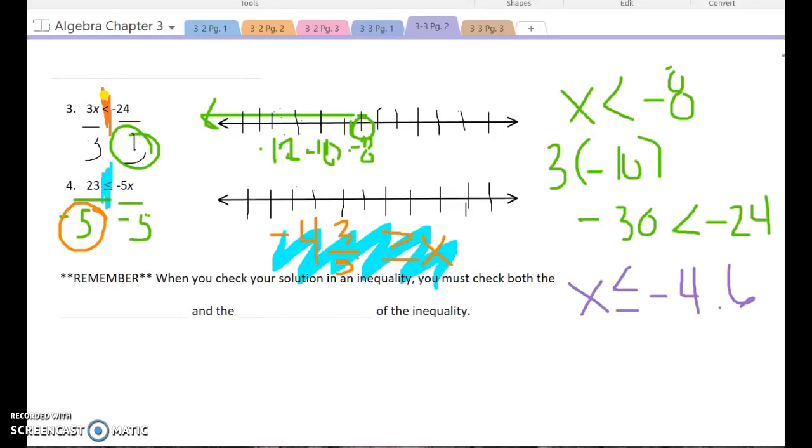So now my negative four and six tenths, when I go to graph it, if I decide that this is negative four and this right here is negative five, then this is negative 4.5. Because I've got that equal to sign, I'm going to fill in my circle and it has to be less than that. So I'm going to draw my arrow over.